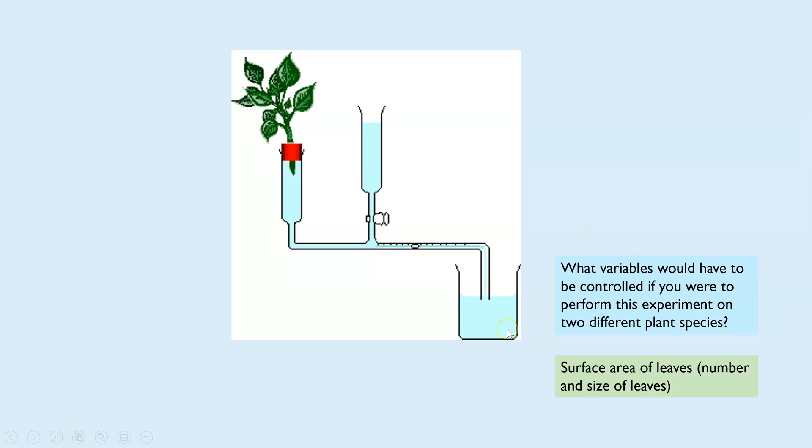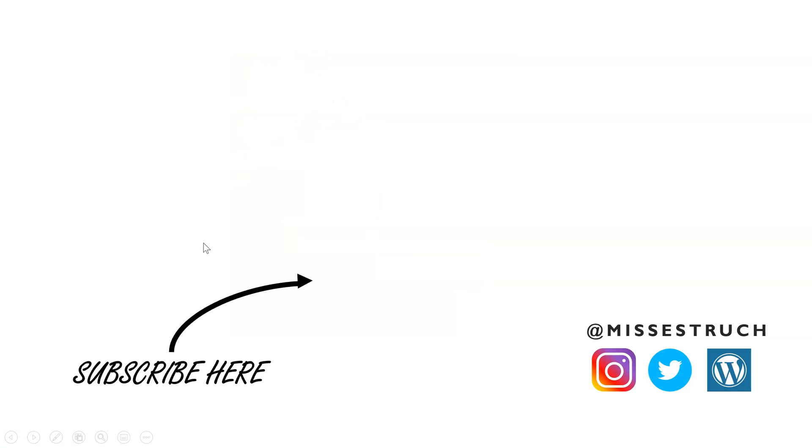The last question is: what variables would have to be controlled if you were to perform this experiment on two different plant species? You're examining is there a difference between the rate of transpiration on those two different plant species. The key variable that has to be controlled is the surface area of the leaves—you need to make sure there's the same number and the same size leaves so that's a fair comparison.